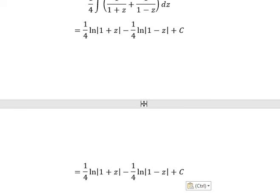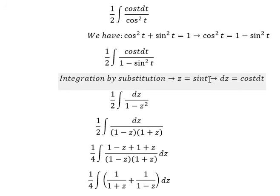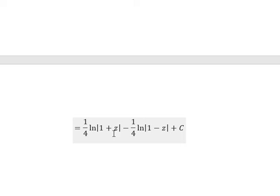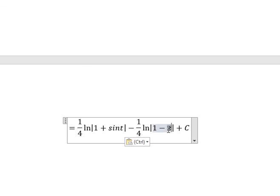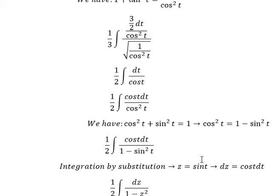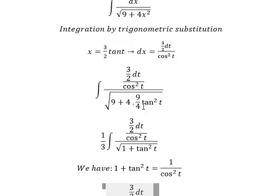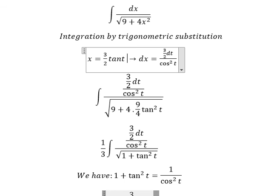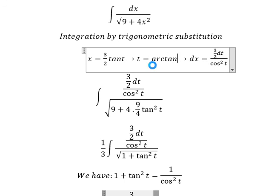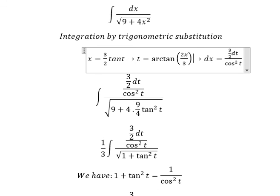Now, we change z back to sin t. And t, we can roll back to x. And in this one, you will get about z equals to arctan of 2x over 3. We put 3 over 2 on the left. That's why you got about 2 over 3 multiplied with x.